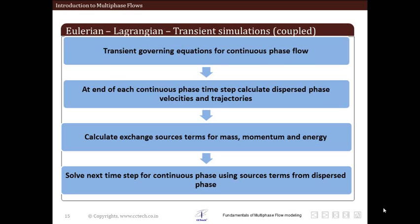The first type of algorithm is for transient simulations solved in a coupled way. Coupled means we solve the continuous phase equations and the dispersed phase equations together simultaneously. There are basically four steps in this particular algorithm.